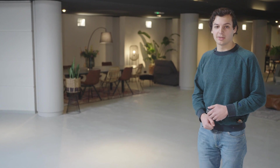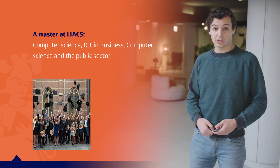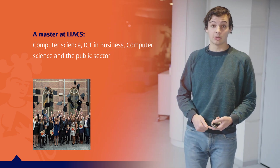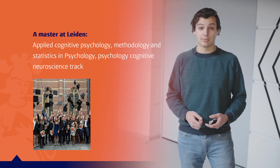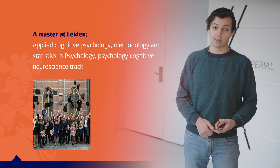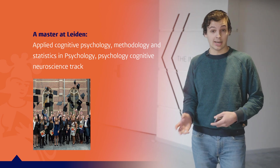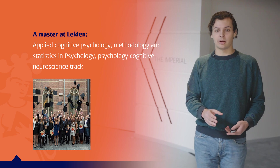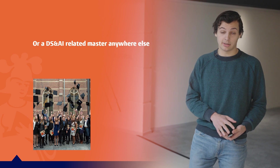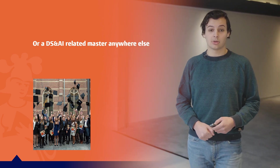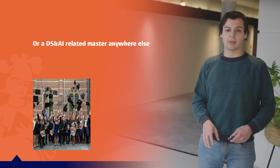After completing the bachelor, you have a few possibilities for doing your master. The first is doing your master at LIACS, which is the Leiden science faculty — for example computer science, which also offers an artificial intelligence track, ICT in business, or computer science in the public sector. A second possibility is doing your master elsewhere at Leiden, for example applied cognitive psychology, methodology and statistics in psychology, or the psychology cognitive neuroscience track. For these masters you do have to complete certain electives during your third year. The final option is doing a data science and AI related master anywhere else — in the Netherlands, Europe, or even further — and you could also still do a computer science related master, though there may be some admissions requirements.